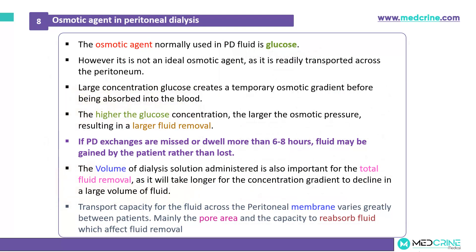In peritoneal dialysis, the normal osmotic agent used is glucose. However, glucose is not an ideal osmotic agent because it can readily be transported across the peritoneum. Large concentrations of glucose create a temporary osmotic gradient before it starts being absorbed into the blood. The higher the glucose concentration, the larger the osmotic pressure, resulting in larger fluid removal.